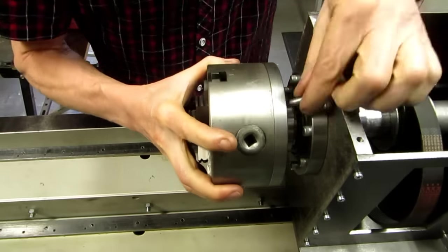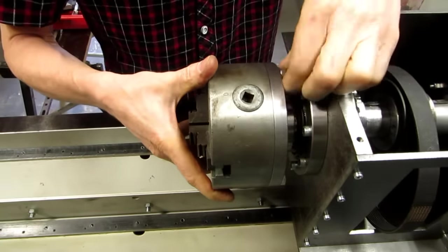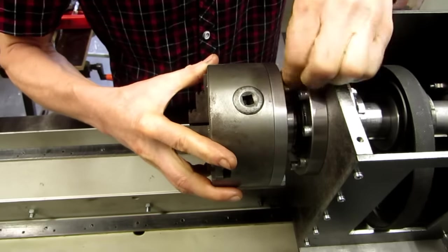The chuck is mounted onto the spindle with 3 bolts. Note that the spindle main head still needs to be faced.